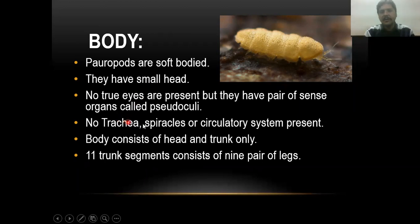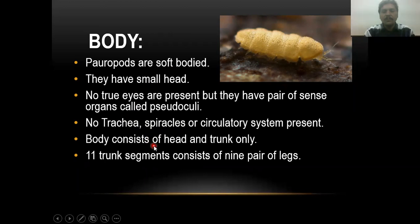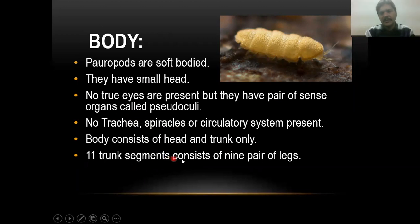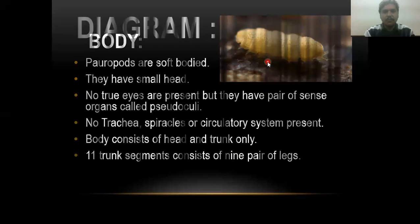The body respires through the skin via the diffusion mechanism. The body is mainly divided into head and trunk regions. The trunk region is where its small legs arise, and there are almost 11 segments in the trunk region, with 9 segments bearing paired legs.